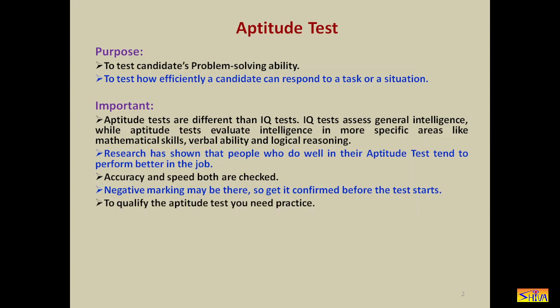To qualify the aptitude test, you need practice. For companies that are bulk recruiters, if you clear the aptitude test, the probability of clearing the interview is more than 75%. For example, if they select 100 candidates after the aptitude test and after the final personal interview they reject only 20 or 25 candidates — it means if you clear the aptitude test, your chances of getting selected after the final interview are very bright.